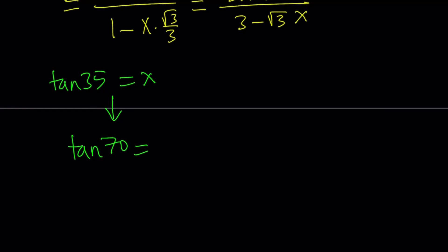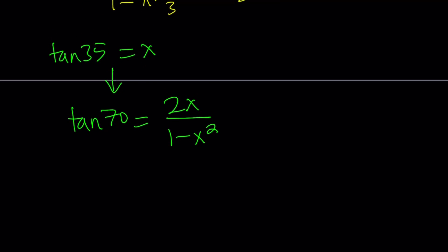When I double the angle, you know, there is a double angle formula. If tangent 35 is x, tangent 70 is going to be 2x divided by 1 minus x squared, which is a very important formula if you're doing trigonometry.